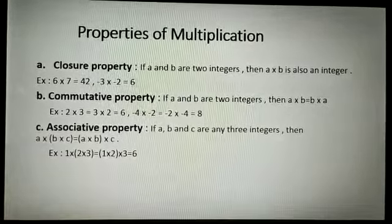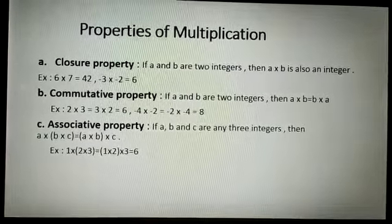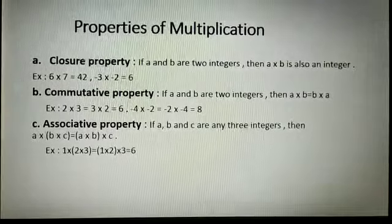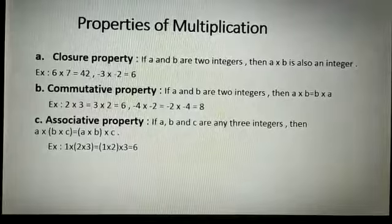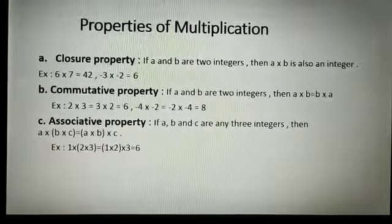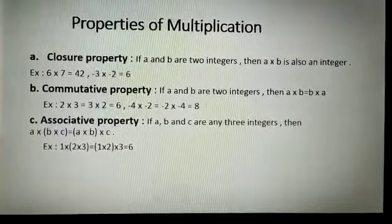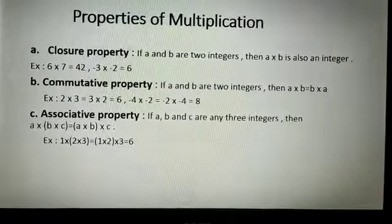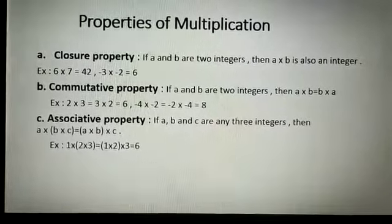The next property is associative property. In associative property, we take three integers A, B, and C. Then A multiplied by (B multiplied by C) equals (A multiplied by B) multiplied by C — both answers will be the same. For example: 1 multiplied by (2 multiplied by 3) equals (1 multiplied by 2) multiplied by 3. You will get the same answer, that is 6, on both left hand side and right hand side. This property is called associative property.